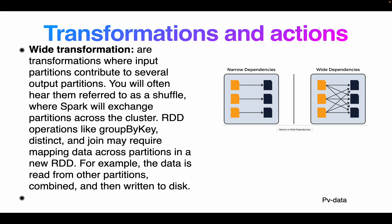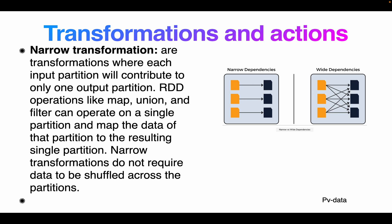There are two types of transformations: narrow dependency and wide dependency. In a narrow transformation, each input partition contributes to only one output partition. For example, map, union, and filter operate on a single partition and map data to a single resulting partition. Narrow transformations do not require data to be shuffled across partitions — it is a one-to-one map. Filter, union, and similar operations are all narrow transformations.